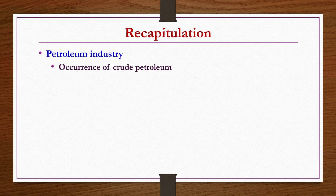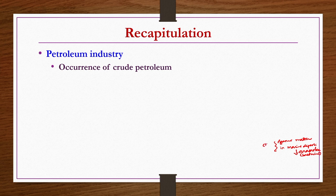We started discussing the petroleum industry with an introduction to the importance of petroleum industries in chemical industries and its contribution towards the economics of the nation. Then we discussed the occurrence of crude petroleum — how it occurs. Whatever organic matter is present in marine deposits will undergo anaerobic processing by specific bacterial attack, and these bacteria consume carbohydrates and proteins, producing fats.